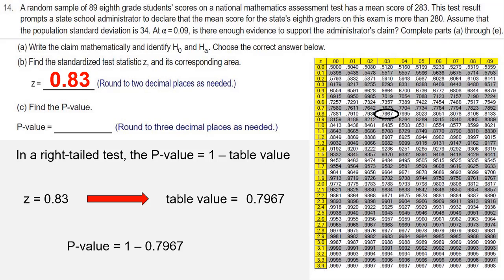Our p-value is 1 minus 0.7967, which is 0.2033. That's our p-value.